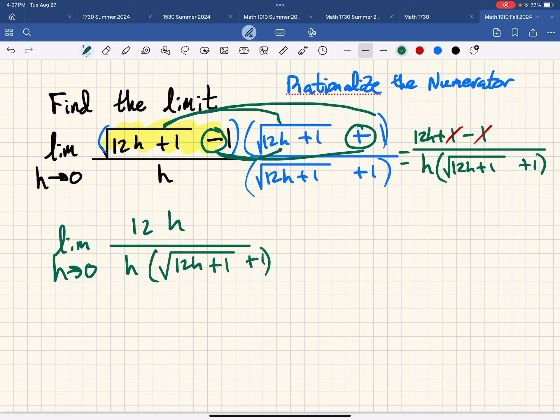And now the h's can cancel and the result would be the limit as h goes to 0 of 12 divided by the square root of 12h plus 1 plus 1.